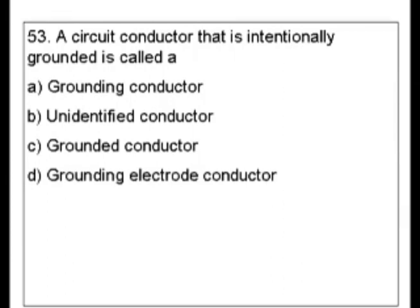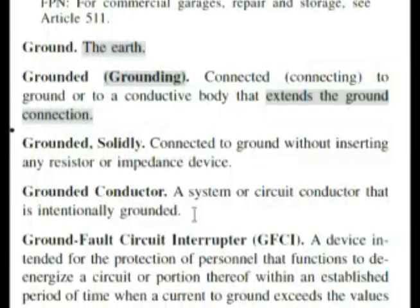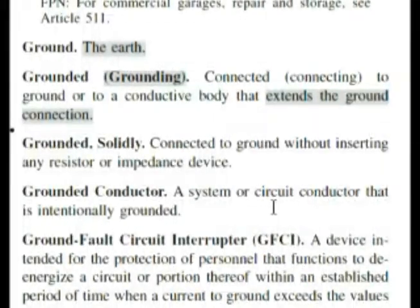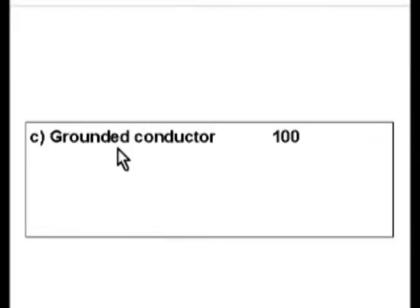With this type of question, it's almost 100% of the time going to be a definition. So you choose which one you think is the right answer and look that up. Most of the time definitions are in the front of the code book in Article 100. Here we are at the front of the book in Article 100: grounded conductor — a system or circuit conductor that is intentionally grounded. Grounded conductor was choice C in our exam.